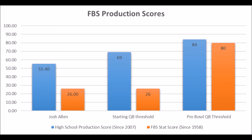On top of that, Josh Allen's FBS stat score — his best single-season performance, which wasn't in 2017 but was in 2016 — his best year was 26 out of 100. Based on my data since the 1958 NFL Draft Class, 26 out of 100 basically meets the long-term starting threshold, but does not hit the Pro Bowl quarterback threshold.